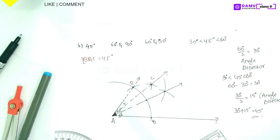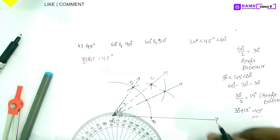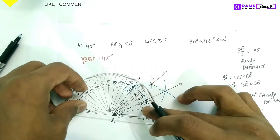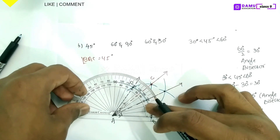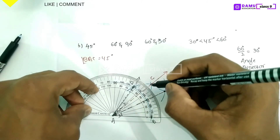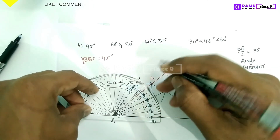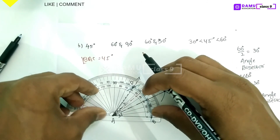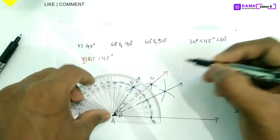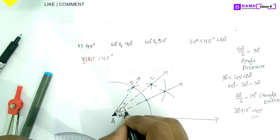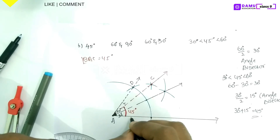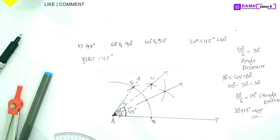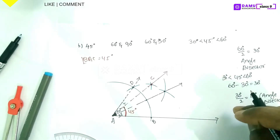Now take the protractor and measure — it's coming exactly 45 degrees. Keep the protractor properly; here it is 45 degrees. The required angle is 45 degrees from the base — this is how we construct 45 degrees. Thanks for watching, please subscribe.